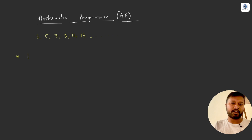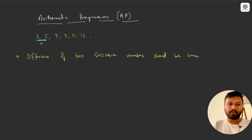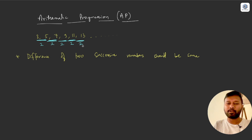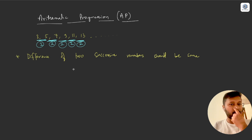To identify arithmetic progression, the difference between two successive numbers should be the same. For example, 5 minus 3 is 2, 7 minus 5 is 2, 9 minus 7 is 2 — every time you subtract you get 2. So the difference between two adjacent numbers is always 2, and that's how you identify this as arithmetic progression.